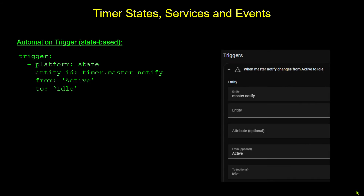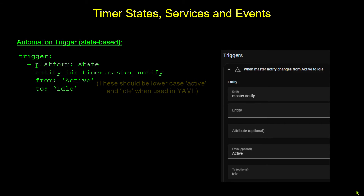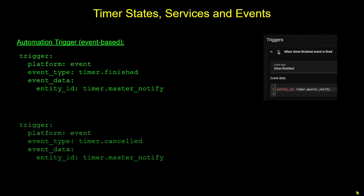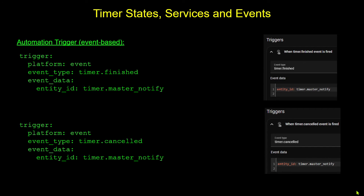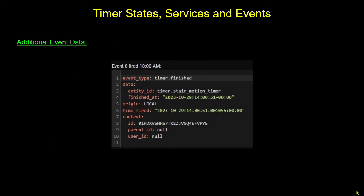We can base the trigger off of state just like with the input boolean — triggering off the timer going from active to idle. However, we can't tell from state alone exactly how it went from active to idle: did it finish on its own, was there a change made, or was it canceled? By using event triggers we can actually differentiate between timer finished, timer canceled, or other timer events, allowing us to run different automations based on those different events. Events also return additional data — such as the time the event fired and the time the timer finished — which we can use in our triggers or conditions.